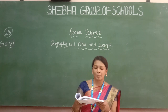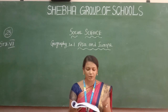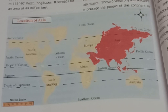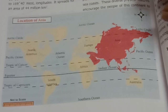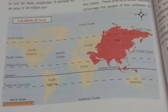Let us know more about our home continent. What we see in the red color is the Asian continent. Even in the picture, the Asian continent is the largest. We are in Asia. It covers 30% of the world's land area and 60% of the population. Asia is known as the world's largest continent.